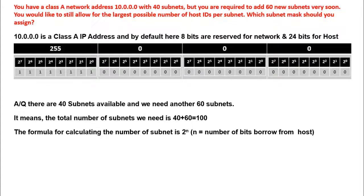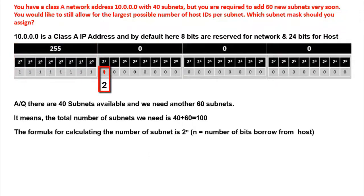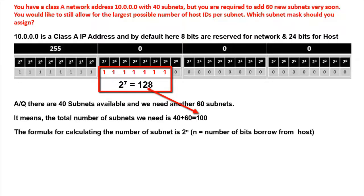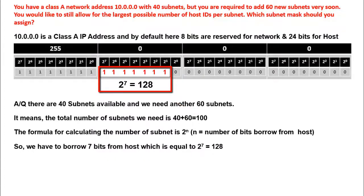In a Class A IP address, all bits in the first octet are reserved for the network, so you have to borrow bits from the second octet. If you borrow 1 bit you get 2; 2 bits gives 4. If you borrow 6 bits you get 64, and if you borrow 7 bits you get 128. You stop here because 128 is the closest number greater than or equal to 100. So we must borrow 7 bits from the host.